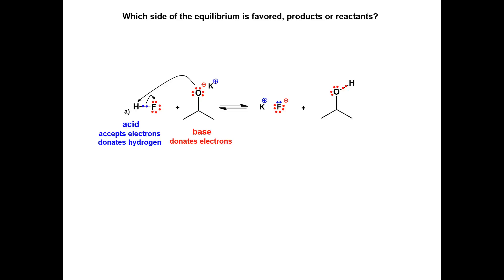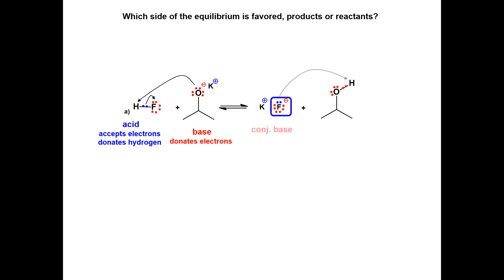Use arrows to help you understand the bond formation and breaking. On the reactant side of the equilibrium, the red labeled electrons on the base show the formation between the base and the hydrogen. The base is donating its electrons to the acid. The blue electrons on the reactant side illustrate the bond breaking that must occur for the base to form a new sigma bond with the hydrogen. The electrons from the hydrogen bond are transferred to what becomes the conjugate base.